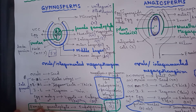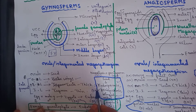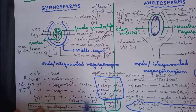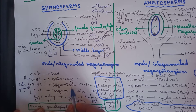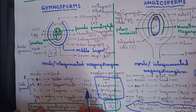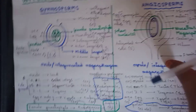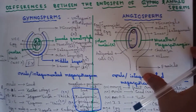Inside the seed, the tissues present are both haploid and diploid. Endosperm is haploid; perisperm is diploid; wings are diploid; and the seed coat with its two layers — testa and tegmen — are both diploid. This is the development of endosperm in the case of gymnosperms.